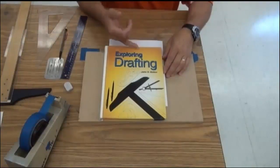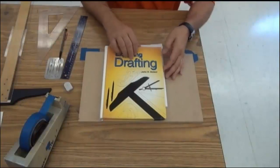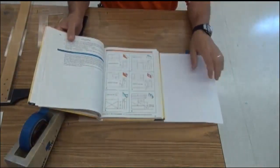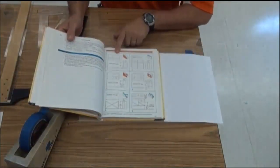In the textbook that we use, Exploring Drafting by John Walker, I'm going to open up a page of an isometric and orthographic projection problem we're going to solve. This is the problem we're going to solve in the book.